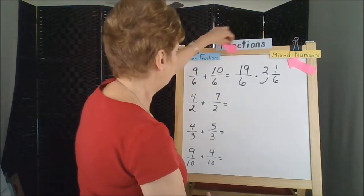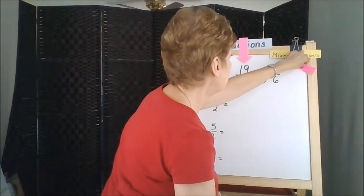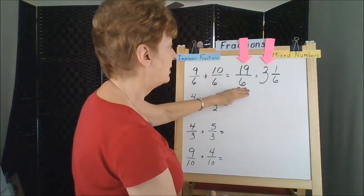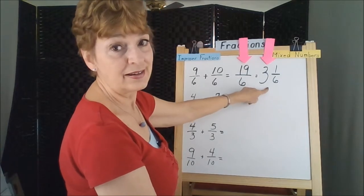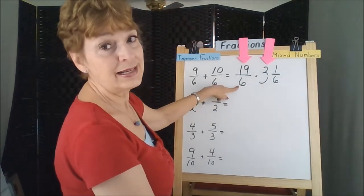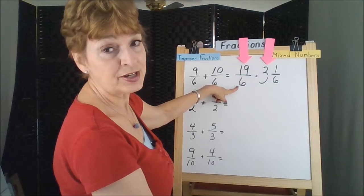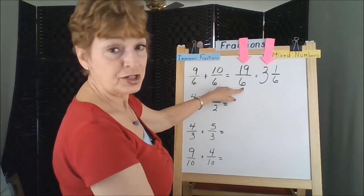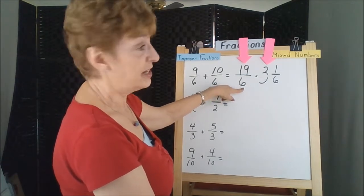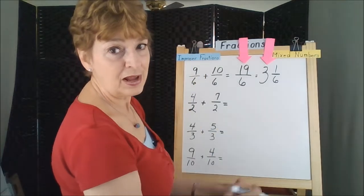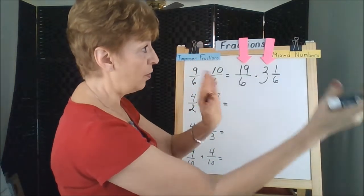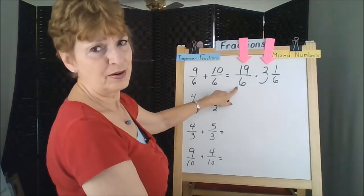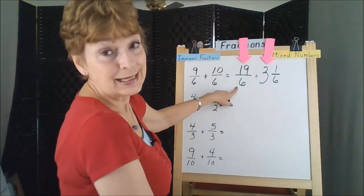These are equivalent, but this one is easier to understand. We needed to have 19/6, the improper fraction, to do the math, to do the calculation. But when you got your answer, you changed it to a mixed number so it would be easier to think about. I can picture three whole pizzas and one sixth of another, but it's hard for me to picture 19 sixths of a pizza.